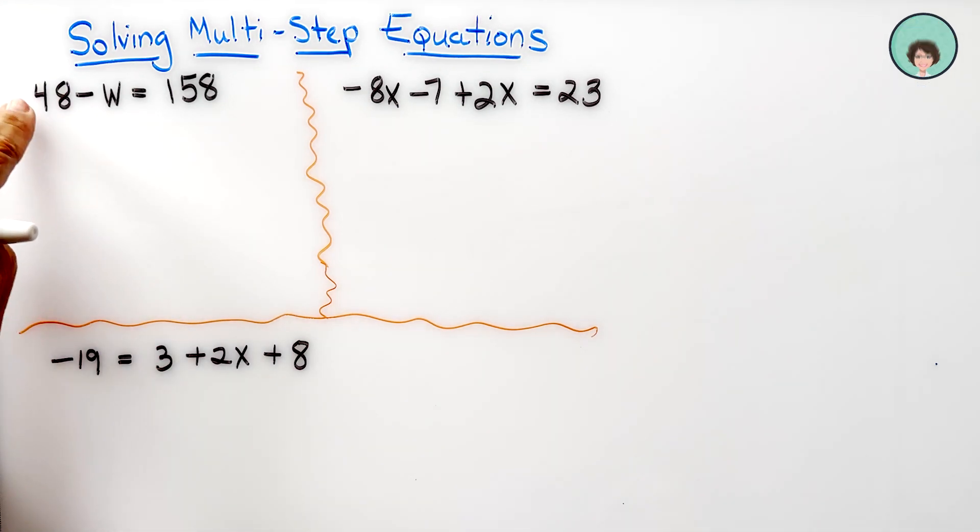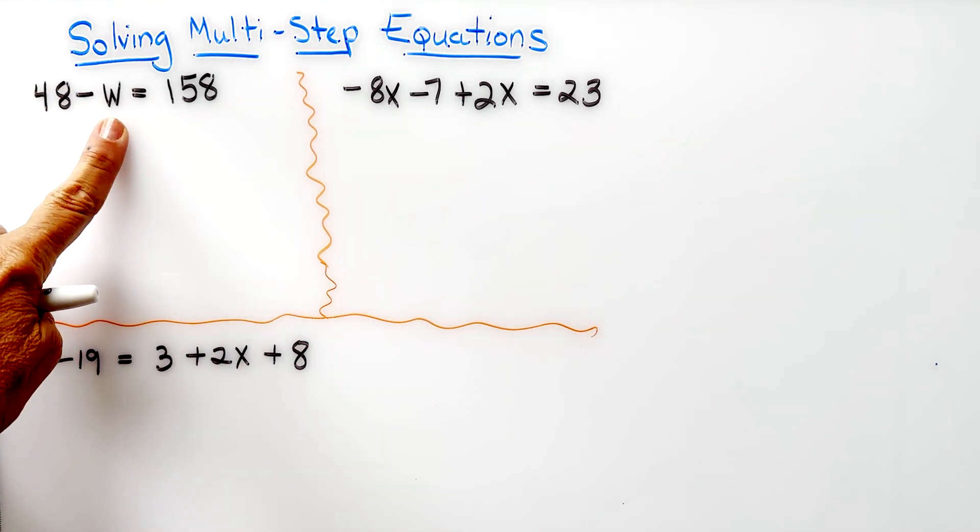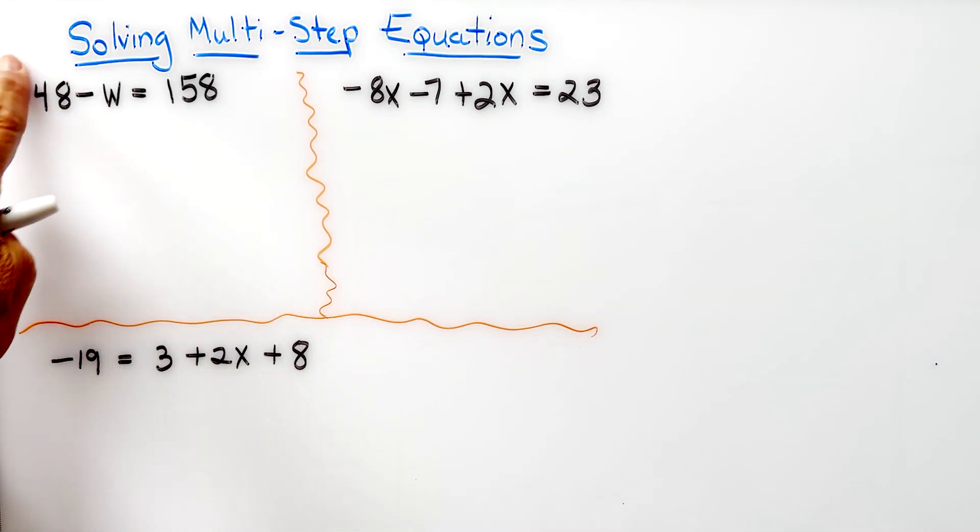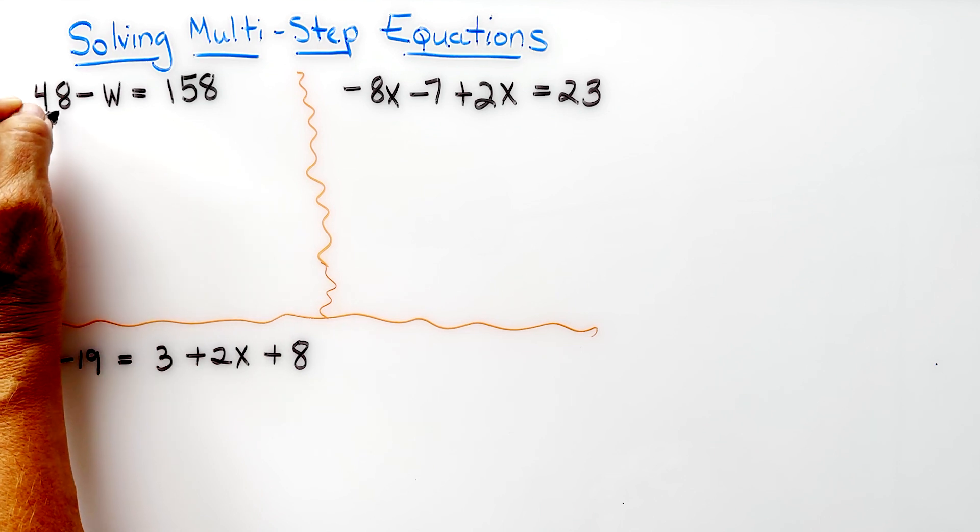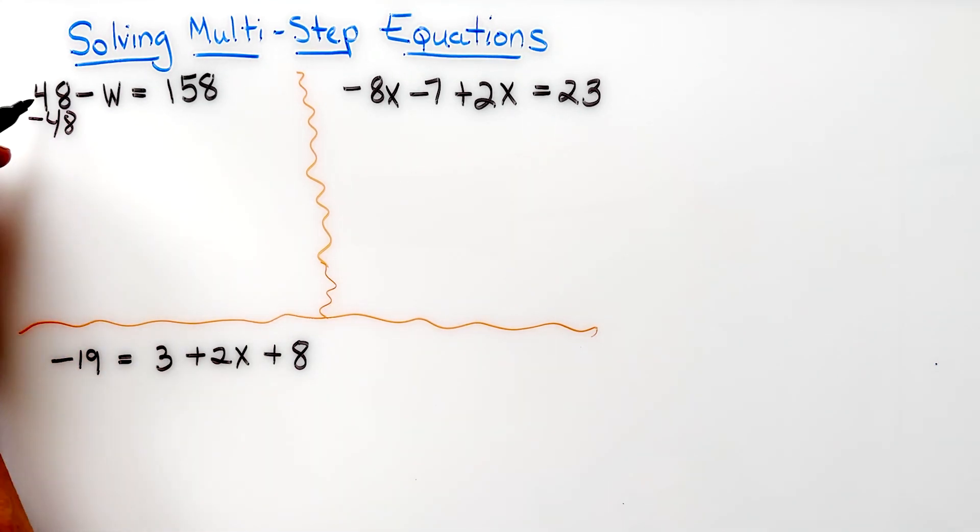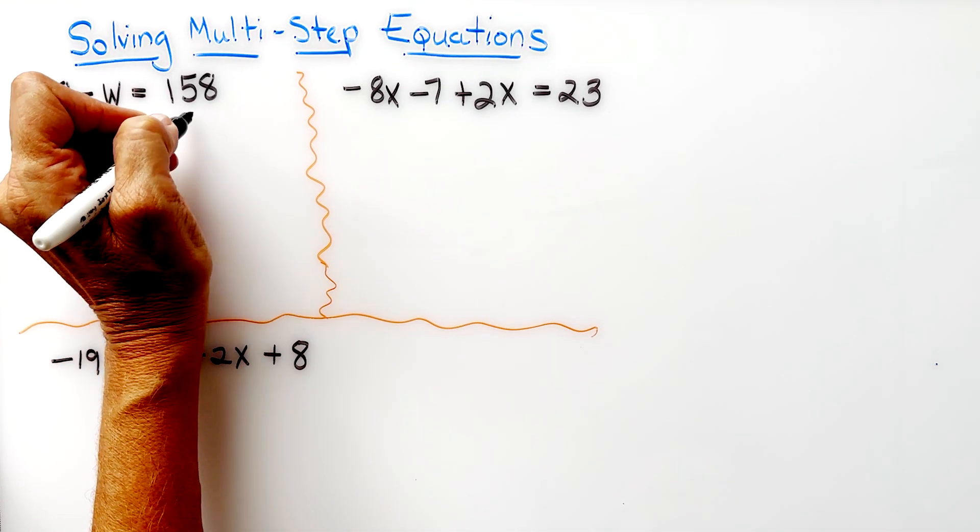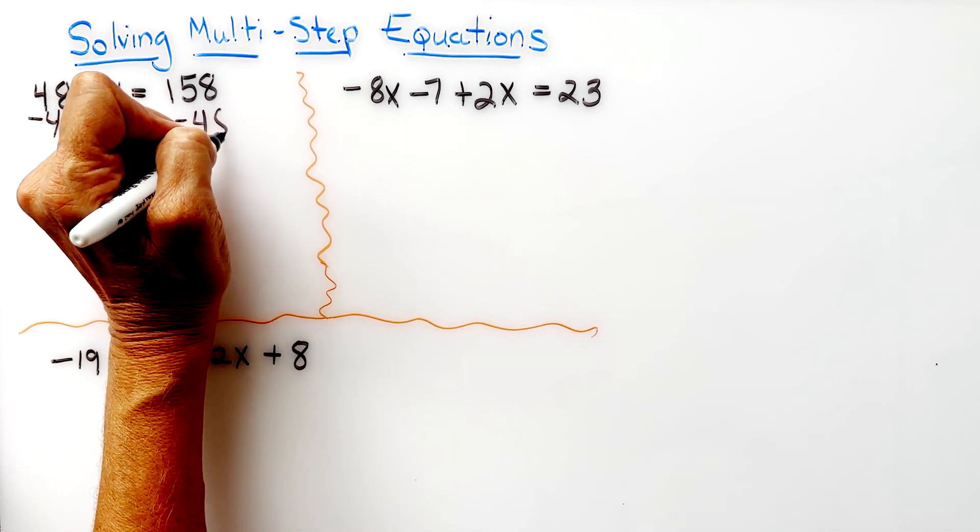We need to get the w by itself. We're going to move the 48 to the other side of the equation by writing the opposite of positive 48 and putting minus 48 on each side.